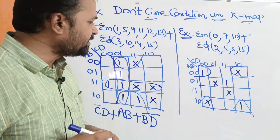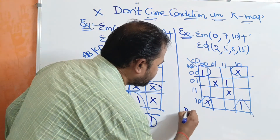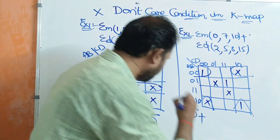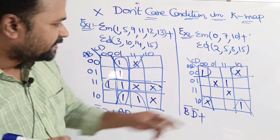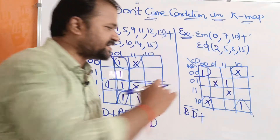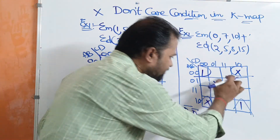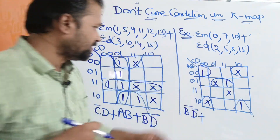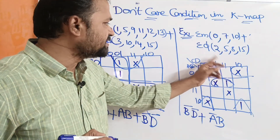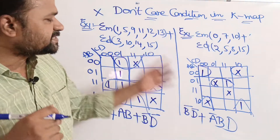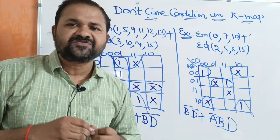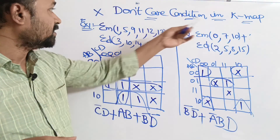Let us write the minterm here: 0, 0, 1, 0 — second 0 is common, which is B bar. And 0, 0, 1, 0 — second 0 is D bar. So B bar D bar plus next. To cover the remaining cell, we make two cells as a group: combination 0, 1 means A bar B. Here 0, 1, 1, 1 — second one is D. So the simplified expression is B bar D bar + A bar B D. Likewise, we can solve any Karnaugh map problem containing don't cares.